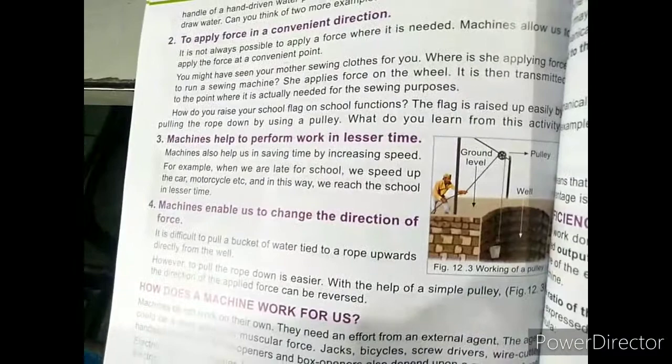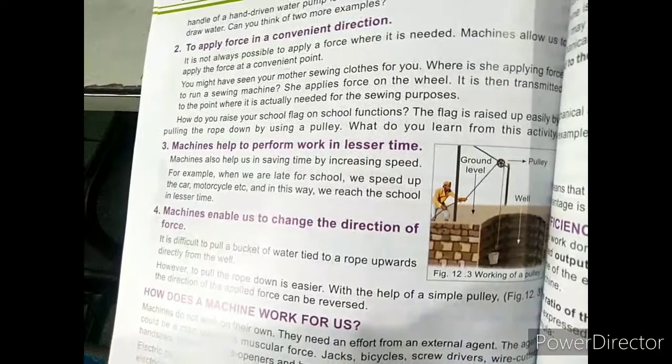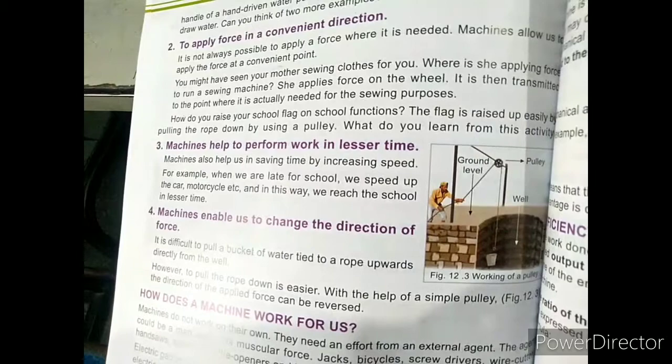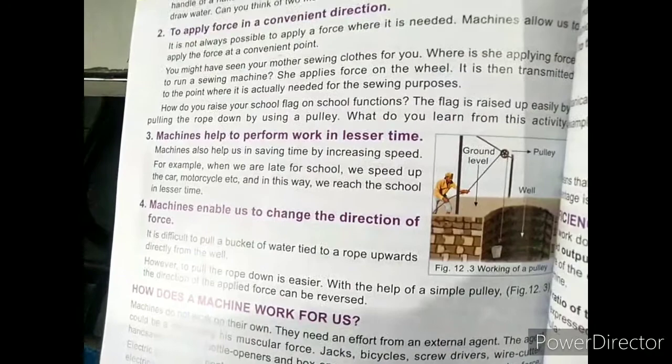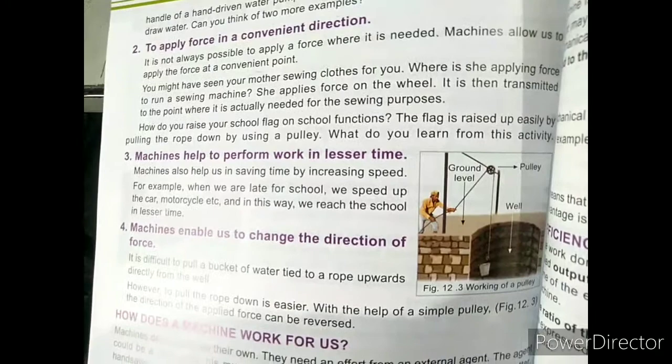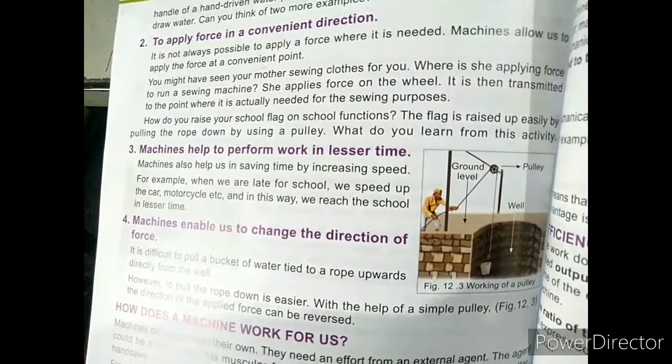Machines help to perform work in lesser time. Machines help any person complete their work in less time. For example, a bicycle is a simple machine — if you are late for school, you increase the speed of your bicycle or motorcycle and reach school in less time. This is how machines reduce the time needed to complete a task.